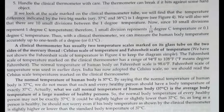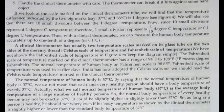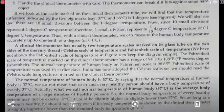Handle the clinical thermometer with care. A clinical thermometer usually has two temperature scales marked on its glass tube — Celsius on one side and Fahrenheit on the other, ranging from 94 to 108 degree Fahrenheit. Normally, the human body temperature is about 37 degree Celsius.